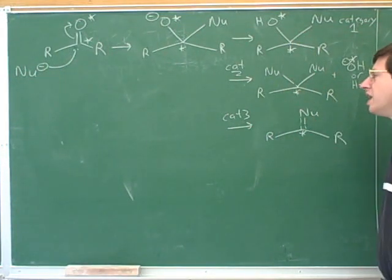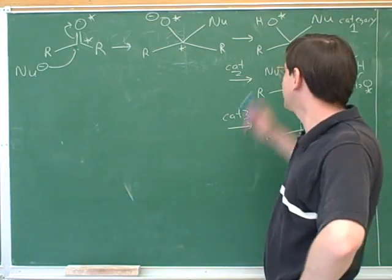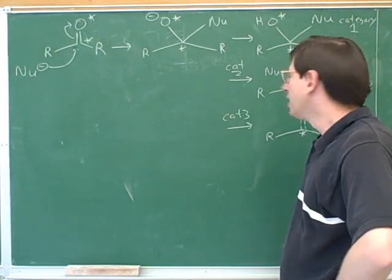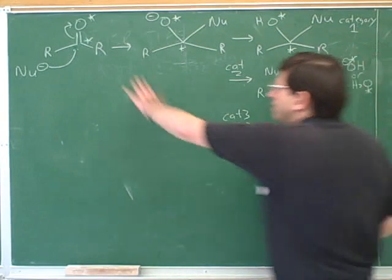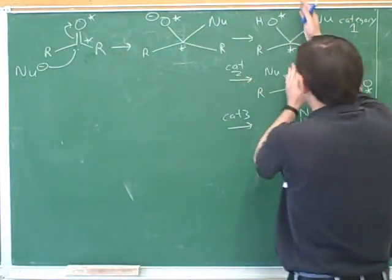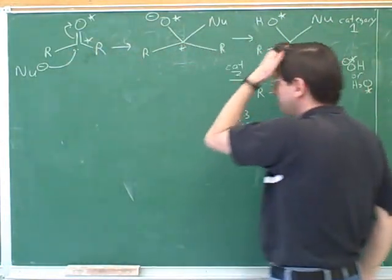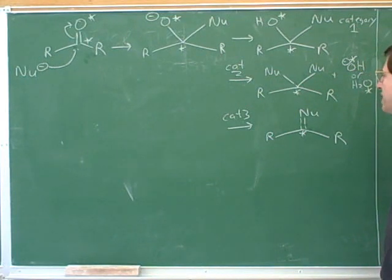So I didn't draw equilibrium arrows here because they're not always that way. But many of these reactions are reversible. And so you can either go from here to here or you can go from some of these products back to here. It depends on the situation. And that turns out to be very important.